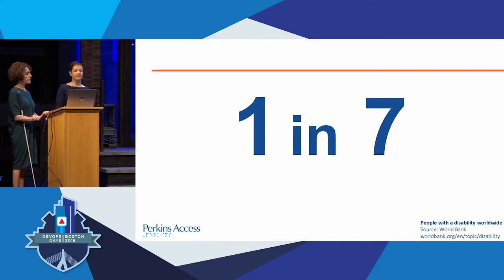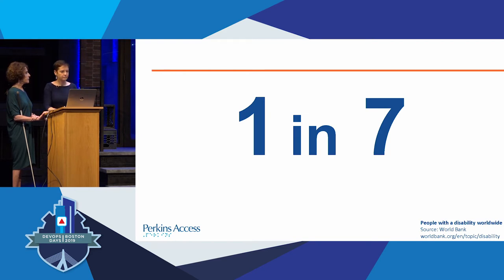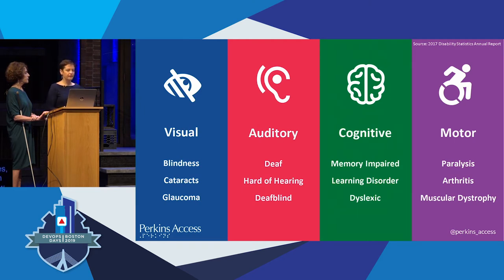One in seven — that is a very conservative estimate of the number of people worldwide that have a disability. That's about 15 to 20 percent of the population. It's important to remember that many disabilities are not visible. People around you all the time have disabilities and you may not realize it. We group disabilities into four key categories including visual, which includes blindness, low vision, things like cataracts, glaucoma, and auditory disabilities which include deafness, hard of hearing. Deaf-blindness obviously spans the visual and auditory categories. Cognitive impairments — that can be learning disabilities, dyslexia, attention disorders.